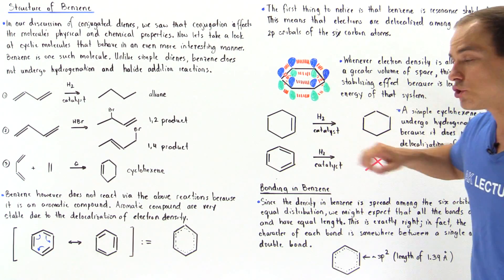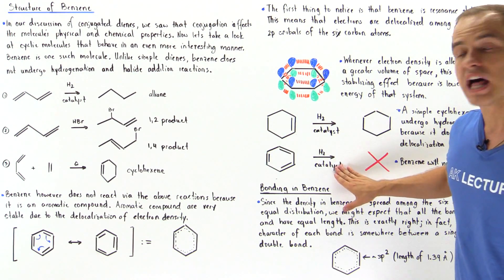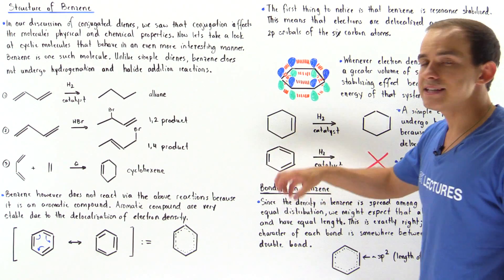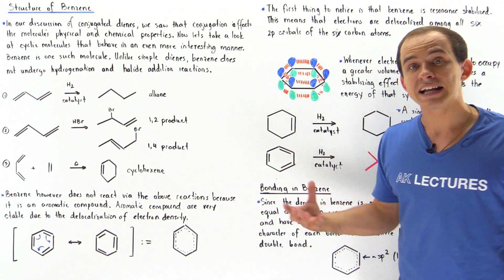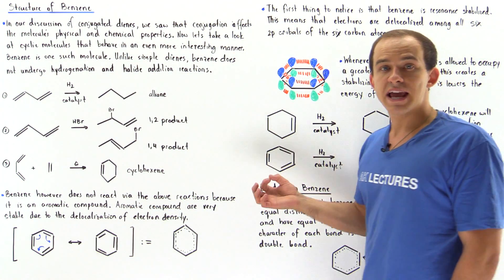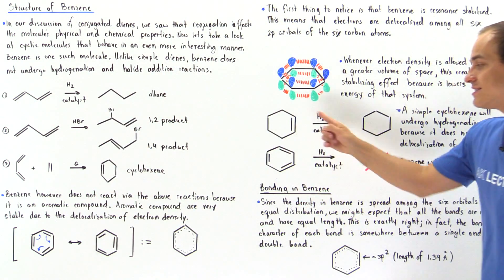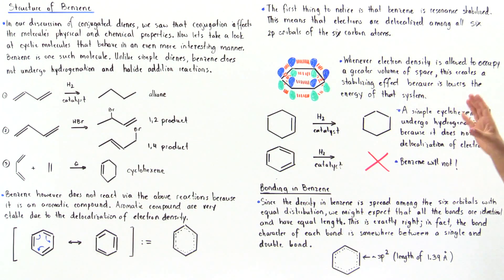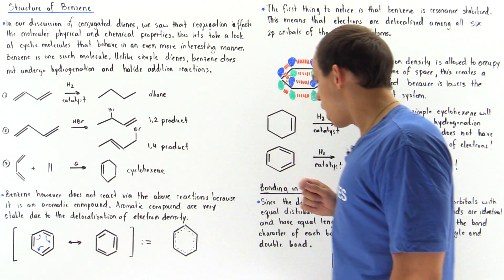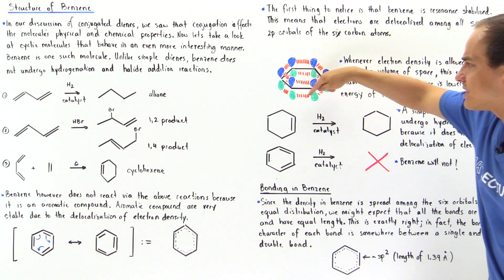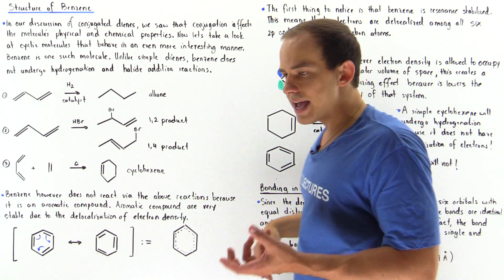So basically, this will undergo this H2 with a catalyst reaction, but this will not because this is an aromatic compound. It's basically very unreactive because it is so stable as a result of the delocalization of the electron density among all those six orbitals. So basically, we saw that all these six orbitals contain an equal amount of electron density.